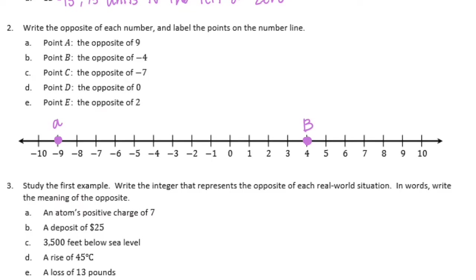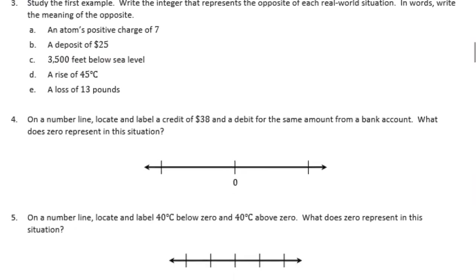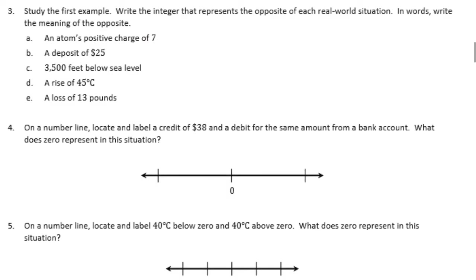Point C: the opposite of negative 7 is 7. Point D: the opposite of 0 is just 0. Point E: the opposite of negative 2 is negative 2.